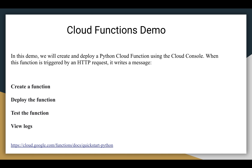In this demo, we are going to create and deploy a Python Cloud Function using the cloud console. When this function is triggered by an HTTP request, it writes a message. First, we are going to create a function. Second, we are going to deploy the function. Third, we are going to test the function. Fourth, we are going to view the logs.